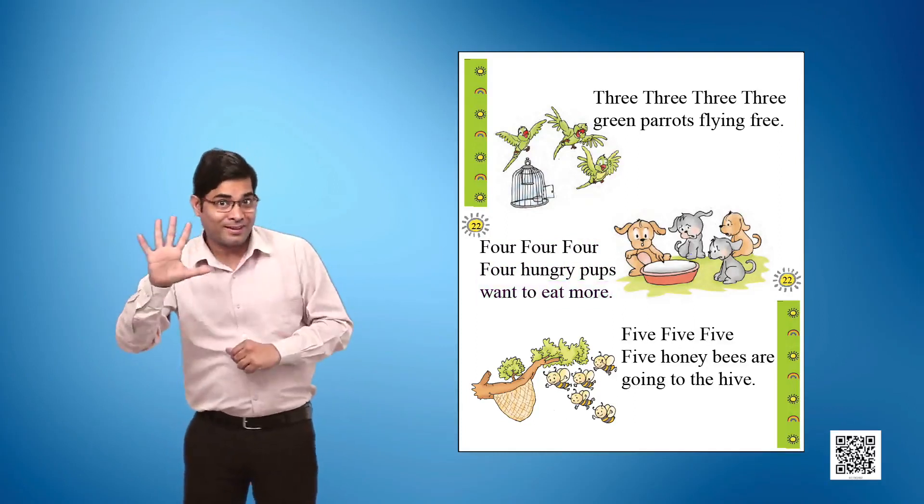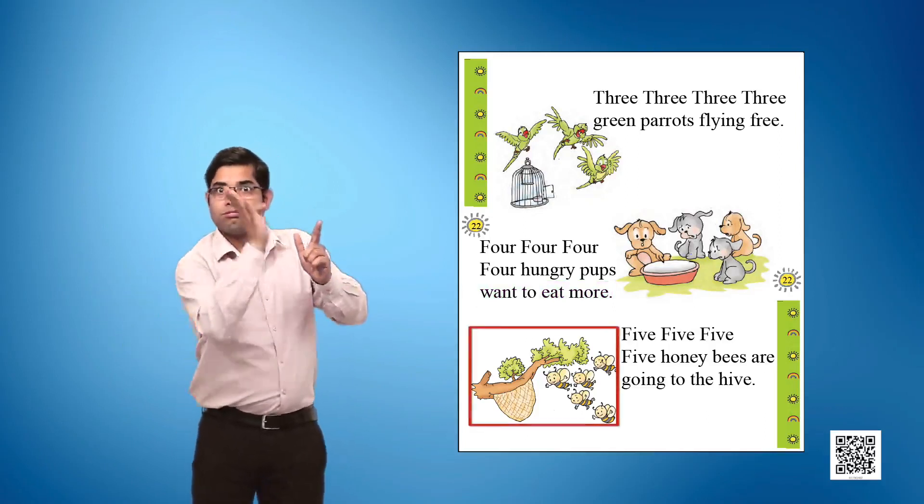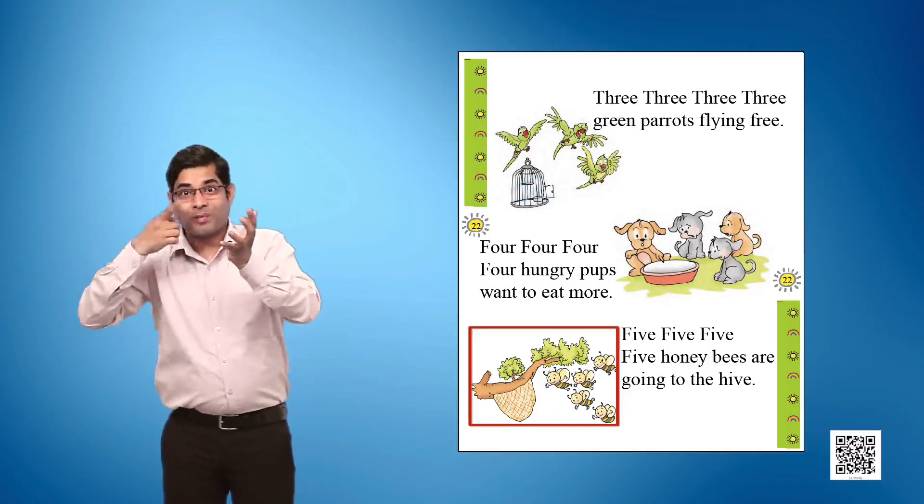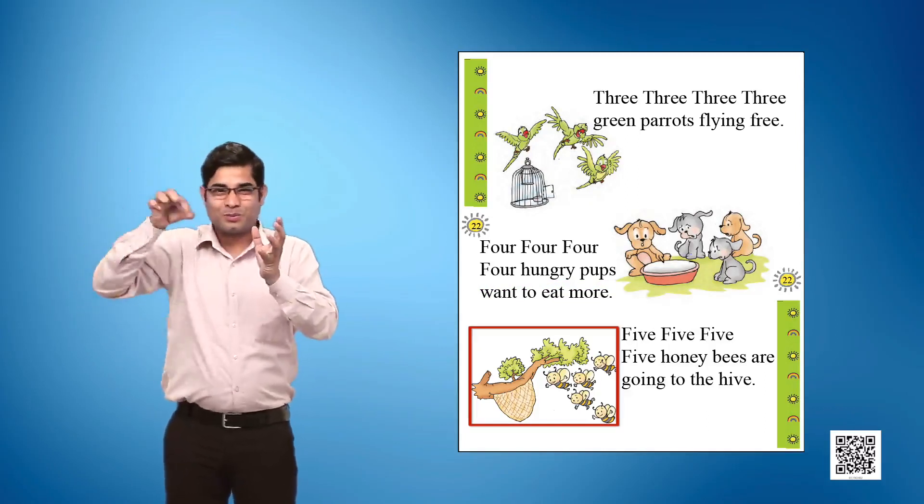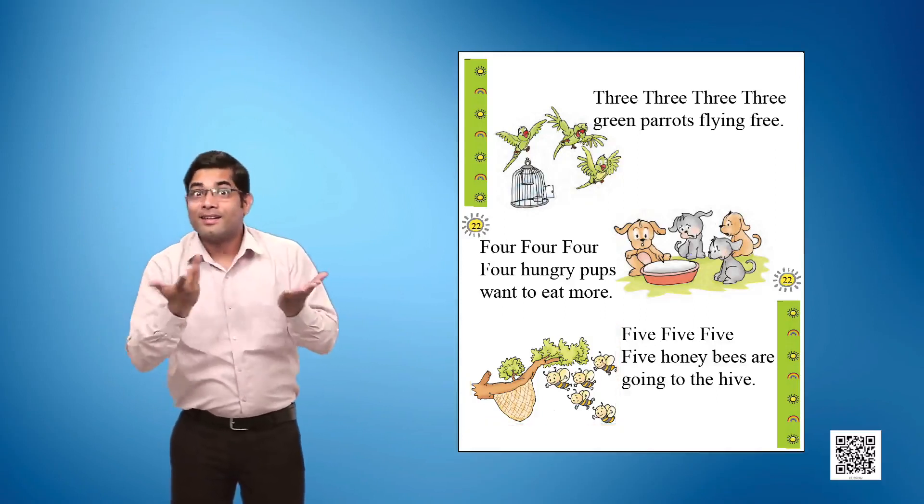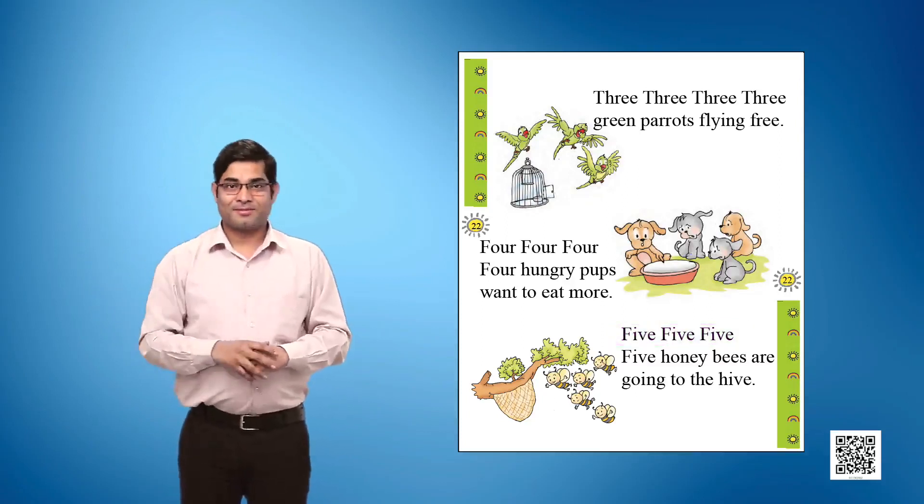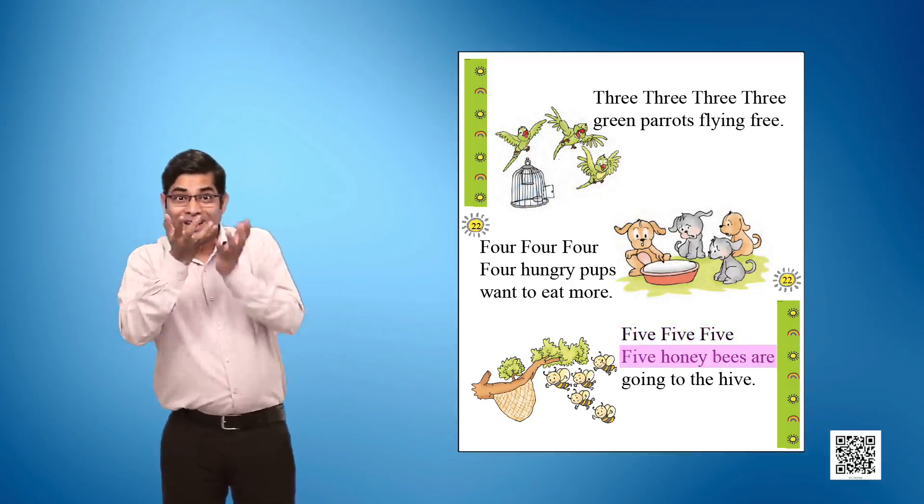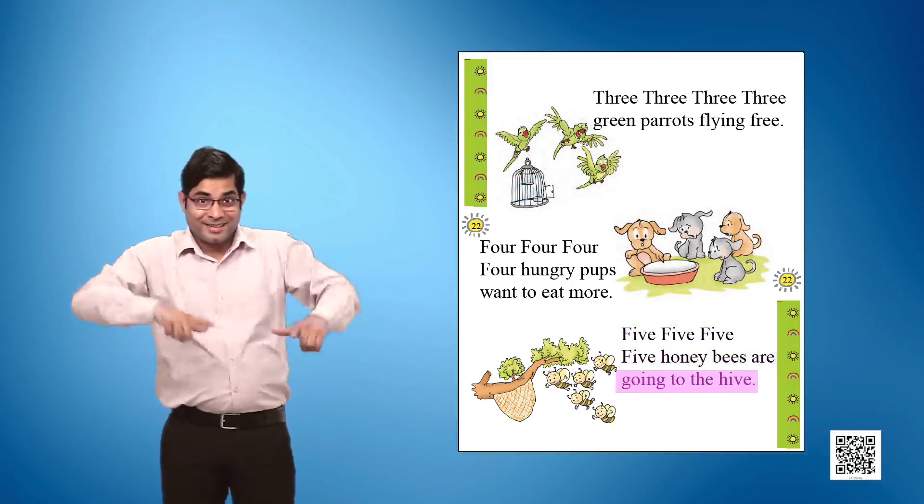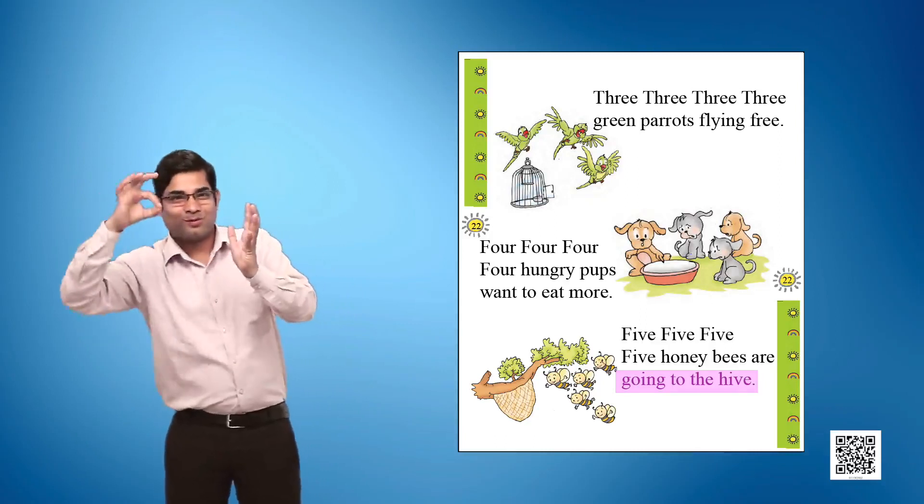Picture 5 shows honeybees flying near the hive, which is on the branch of a tree. Text given: Five Five Five, Five honeybees are going to the hive.